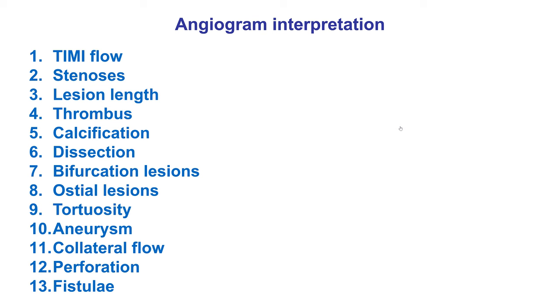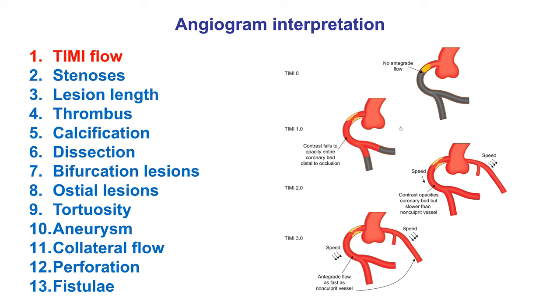For the angiogram, there are 13 components that are assessed. The first one is coronary flow, which is assessed using the TIMI grading system. There are four grades: TIMI 0, 1, 2, and 3.